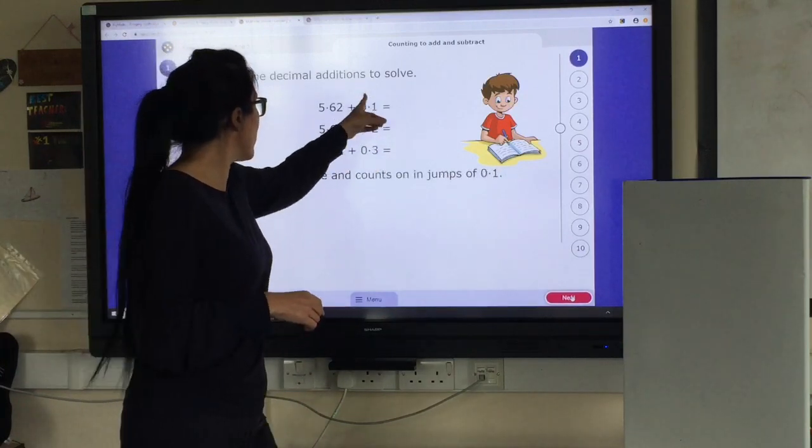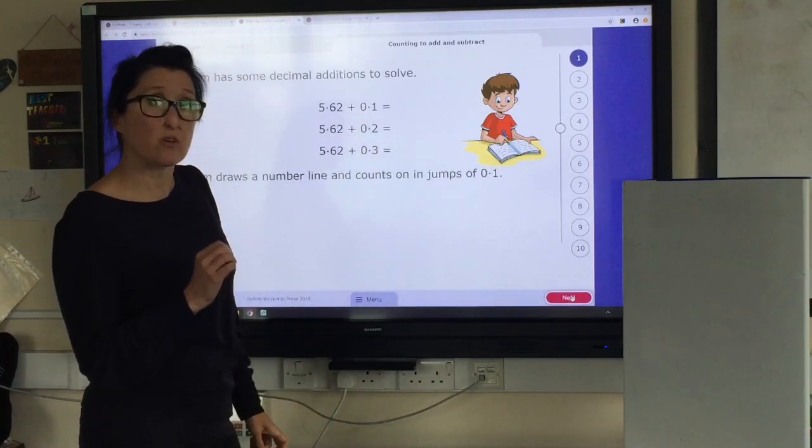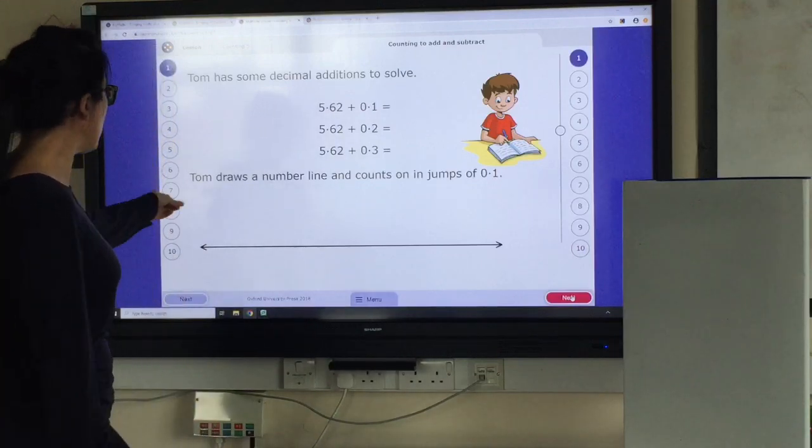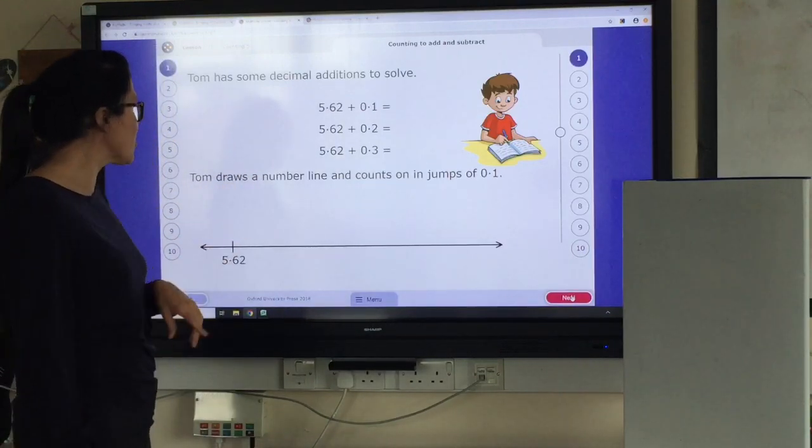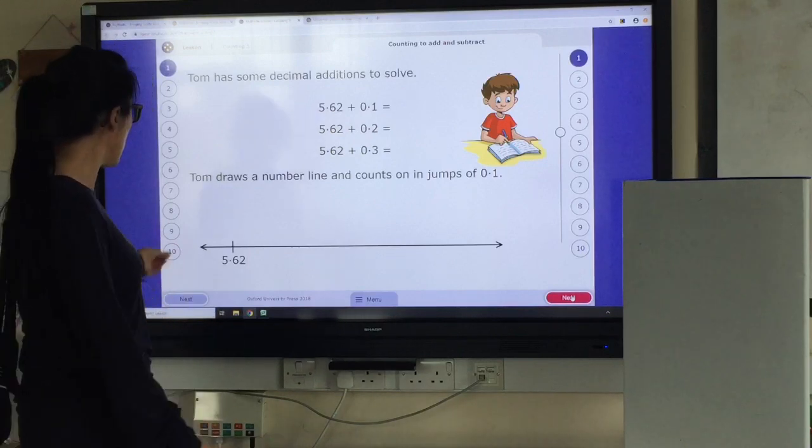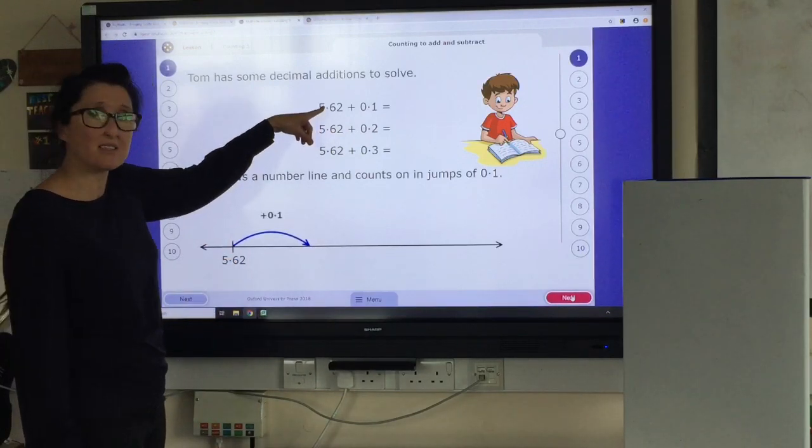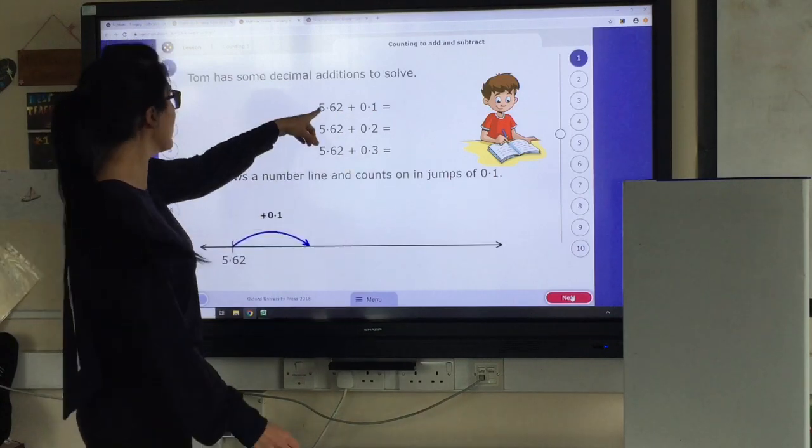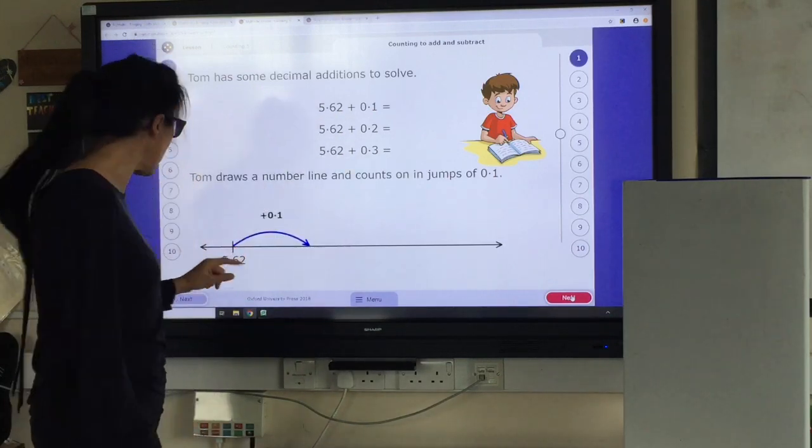We know that because the 1, the 2 and the 3 are in the tenths column. So Tom draws a number line again and he's counting on in jumps of 0.1. So we're starting off at 5.62. So if we look at 5.62, we know that 6 is in our tenths column. So it's the 6 that's going to change each time.